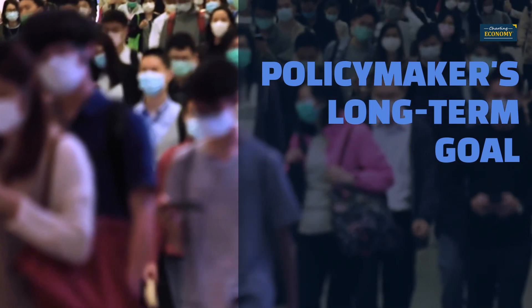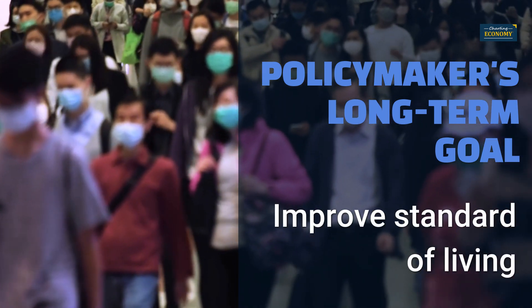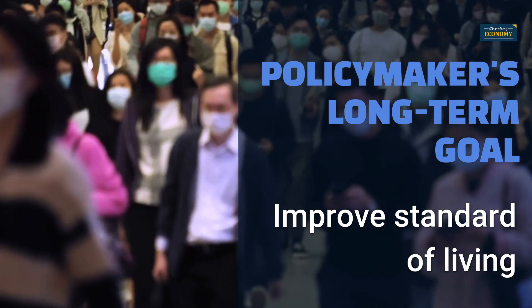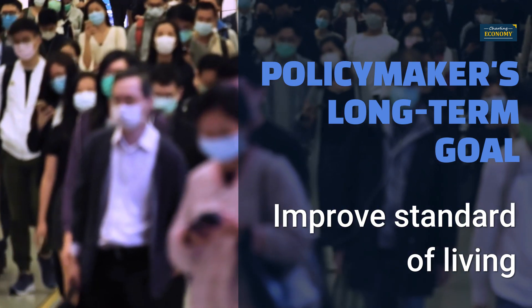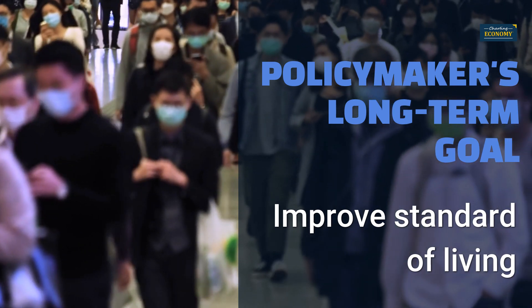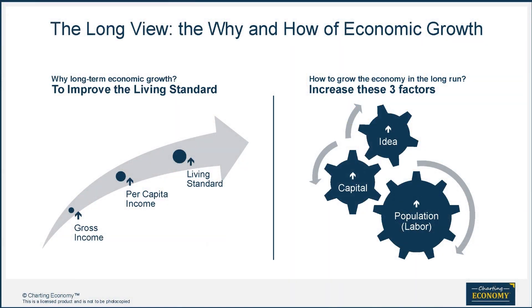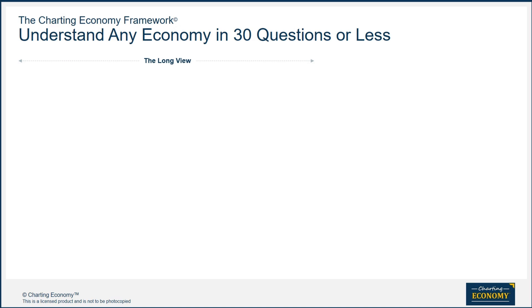To understand the economy, we have to know the objective. Economic policymakers' long-term goal is to improve the country's standard of living and its population's well-being. Without economic growth, the standard of living does not improve, as had been the case in most countries before the Industrial Revolution. So, how do you make the economy grow in the long run? A simple formula for long-term economic growth dictates that you have to increase these three factors: labor, capital, and ideas. That's the job of policymakers. As spectators, we can ask questions that give us clues to assess those three factors and the results on people's well-being.